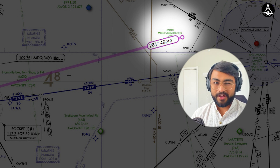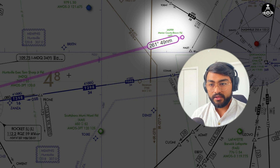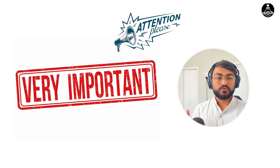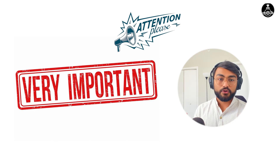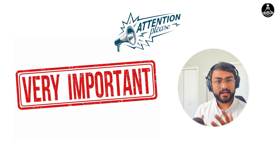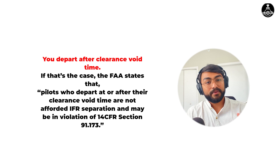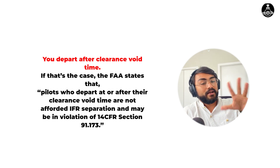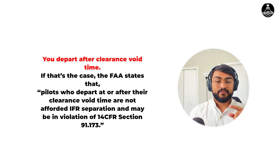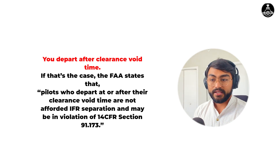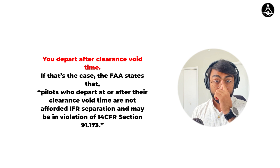You cannot choose to depart five minutes later — you have to be wheels up by void time. The FAA states that pilots who depart at or after their clearance void time are not afforded IFR separation and may be in violation of 14 CFR section 91.173. Now, 91.173 is the regulation that requires you to have a flight plan and a clearance when entering IFR in controlled airspace, so you might be violating that regulation.